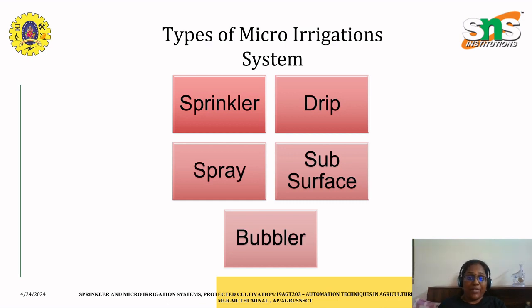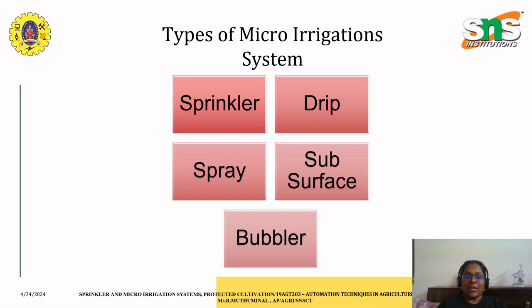As I mentioned before, there are five kinds of micro irrigation systems, among which the most commonly used is the sprinkler irrigation system. A sprinkler irrigation system is a method of applying water to crops or landscapes through overhead sprinklers. This system usually consists of pipes, pumps, valves, and sprinkler heads that distribute water across the area to be irrigated.